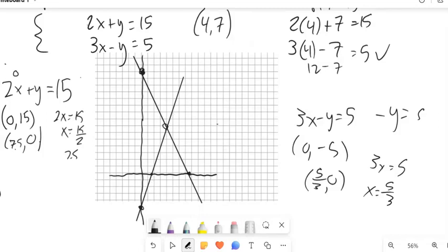And notice where they cross looks like 1, 2, 3, 4, and 1, 2, 3, 4, 5, 6, 7. It looks like the point of (4, 7). So I've graphed both those lines, and I see where they cross. So that's the idea.